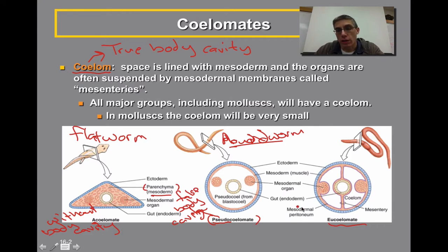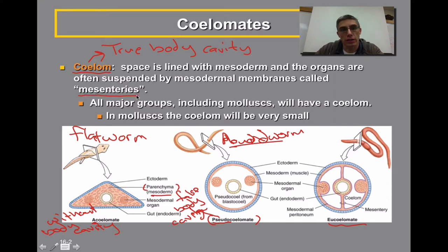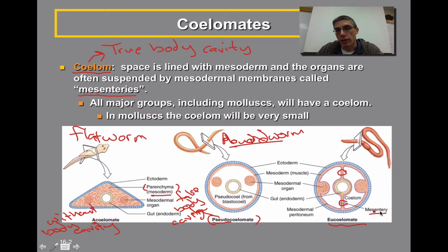The animals we're going to be talking about in Chapter 16, the mollusks, are considered coelamates. They have a true body cavity because they do have mesoderm tissue that actually surrounds the gut tube. In addition to that tissue surrounding the gut tube, they also have a particular type of mesoderm called a mesentery. That mesentery, which you can see right here in this diagram, is used to suspend any of the organs found within that body cavity. The example here is an earthworm — they have a gut tube running down the middle, suspended within the cavity by this mesentery tissue. In mollusks, even though they are considered eucoelamates, the coelom you will see in these animals is actually very, very small.